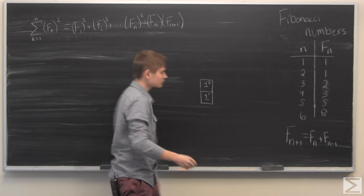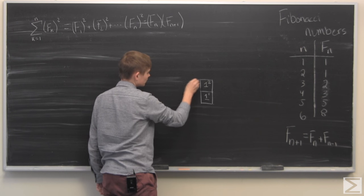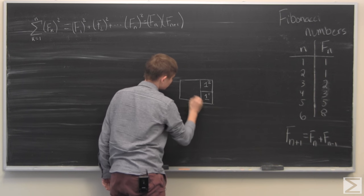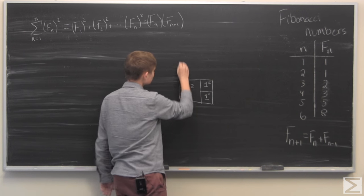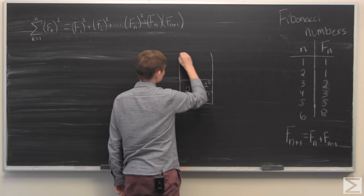And then the next is 2 squared. And what we can do is we can put it right here, 2 squared, and there's 3 squared. You can put it right on top.